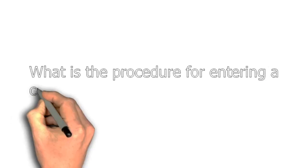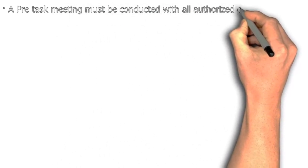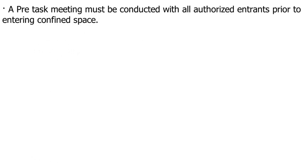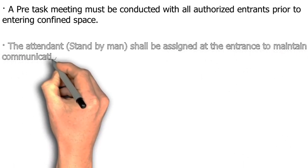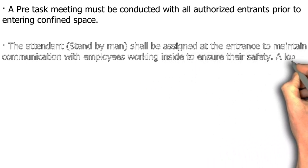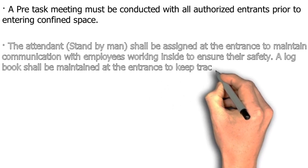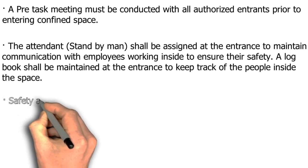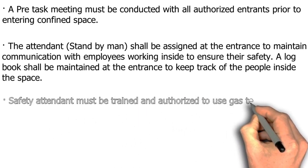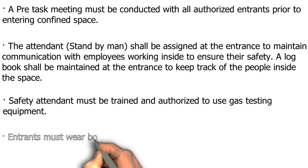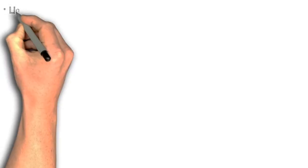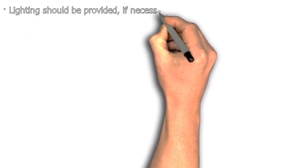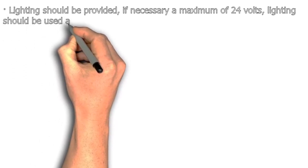What is the procedure for entering a confined space? A pre-task meeting must be conducted with all authorized entrants prior to entering a confined space. An attendant or standby man shall be assigned at the entrance to maintain communication with employees working inside to ensure their safety. A log book shall be maintained at the entrance to keep track of people inside the space. The safety attendant must be trained and authorized to use gas testing equipment. The entrant must wear a body harness, and if necessary a lifeline shall be attached to avoid rescue difficulties. Lighting should be provided, with a maximum of 24 volts if necessary, attached to GFCI.